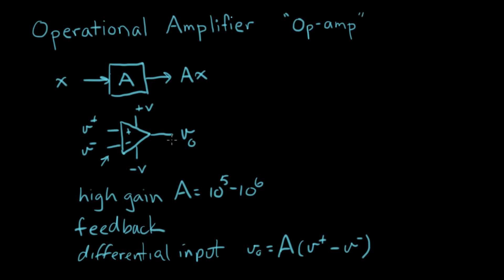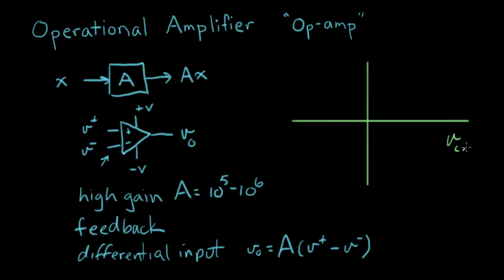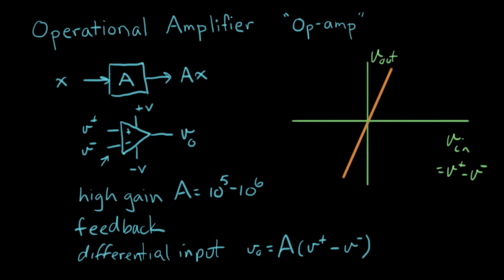Differential input means that V out equals the gain times V plus minus V minus. So the output signal is proportional to the difference in voltage between these two input signals. If I make a plot of this equation with axes V in and V out — where V in equals V plus minus V minus — and apply the gain factor, the result is a very steep line whose slope is A, something like 10 to the fifth or 10 to the sixth, very nearly vertical.